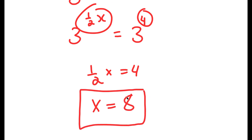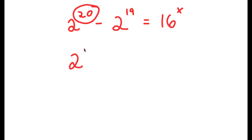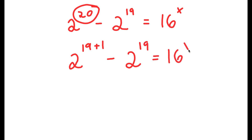So 8 is my answer. Now in this problem, I have 2 to the power of 20 minus 2 to the power of 19 is equal to 16 to the power of x. I'm going to first start by rewriting 20 as 19 plus 1. So now I have 2 to the power of 19 plus 1, minus 2 to the power of 19, is equal to 16 to the power of x.